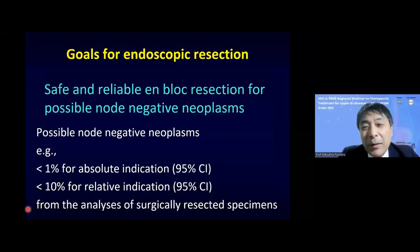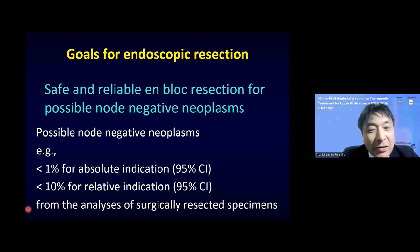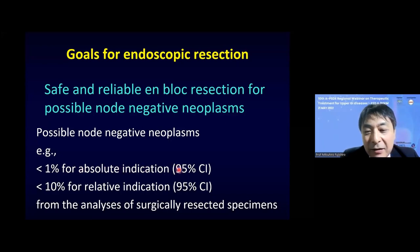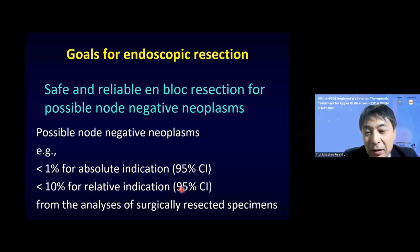The goal of endoscopic resection must be safe and reliable en bloc resection for possible node-negative neoplasms. Node-negative neoplasm definitions vary slightly according to organ — esophagus, stomach, or colorectum. Roughly speaking, absolute indication corresponds to less than 1% lymph node metastasis risk considering the 95% confidence interval, and relative indication corresponds to less than 10% lymph node metastasis, based on analysis of surgically resected specimens.